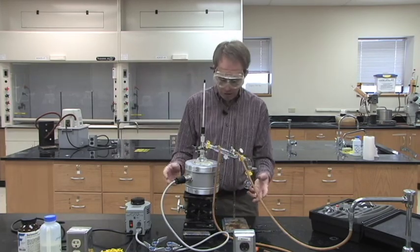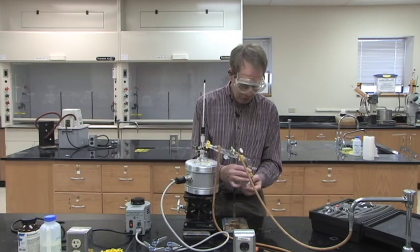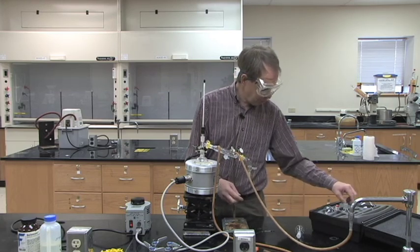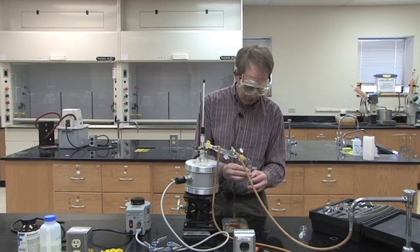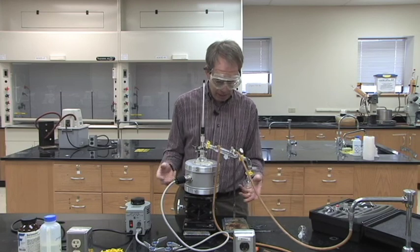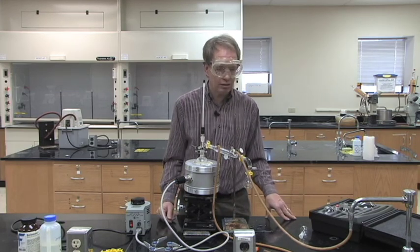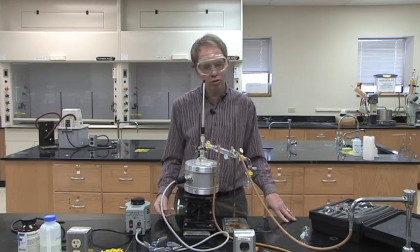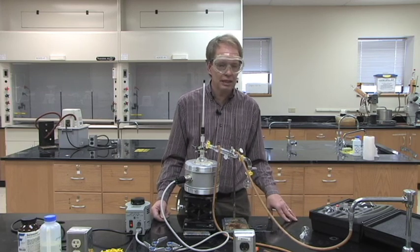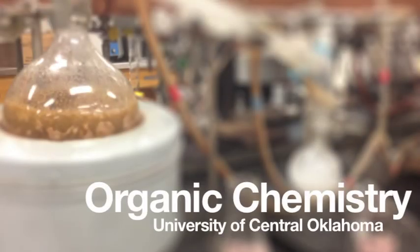And then once you get it to distill, the first couple of drops that distills, you can take away and dispose of and then put another flask up here to collect the rest of your sample so that the forerun you get rid of and then anything that distills from that point on you're ready to use to keep for doing your refractive index to identify what your unknown is in lab and then you're ready to use.